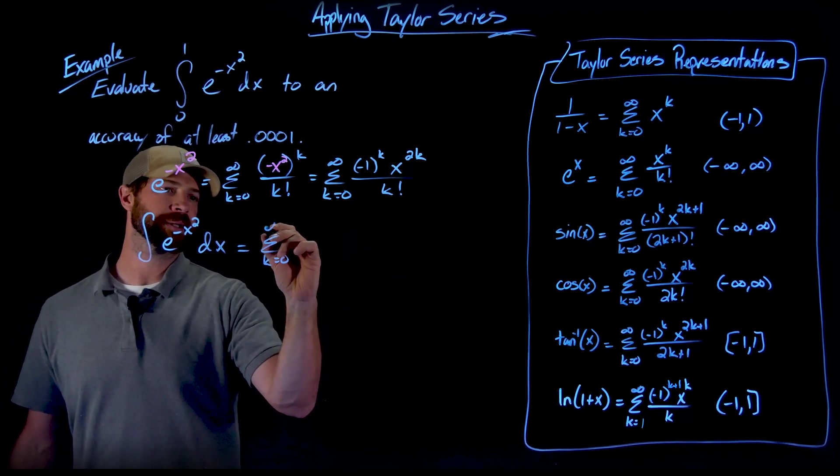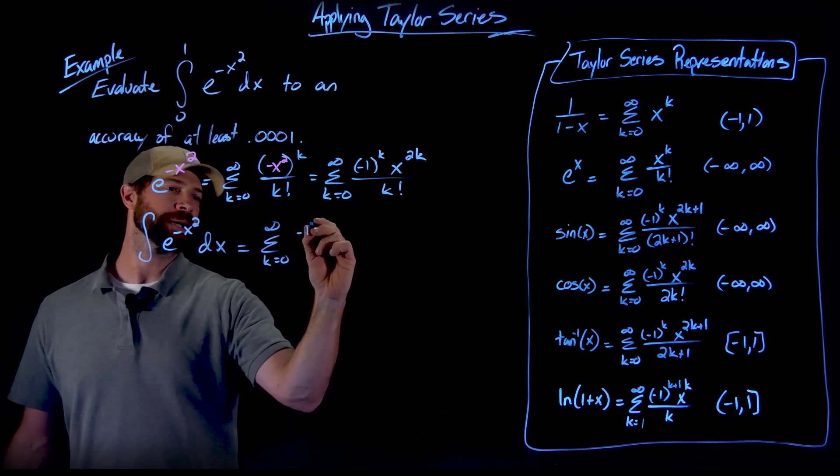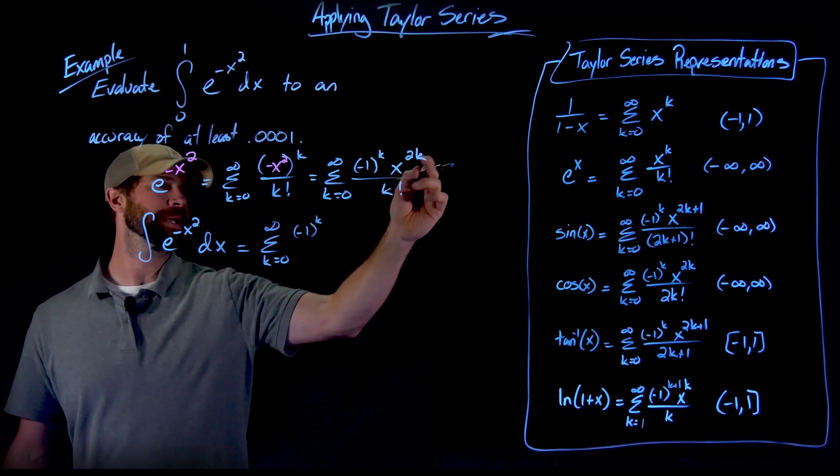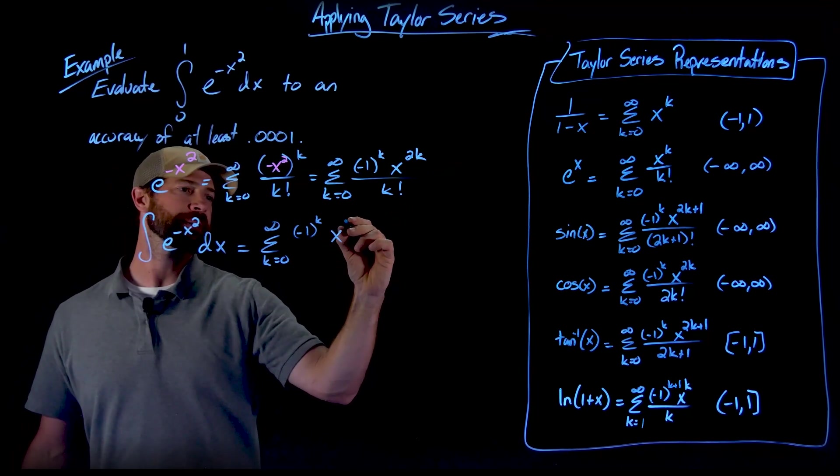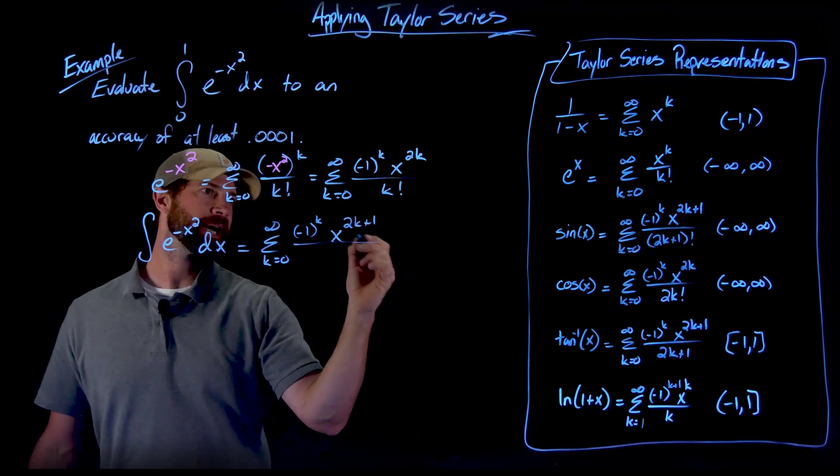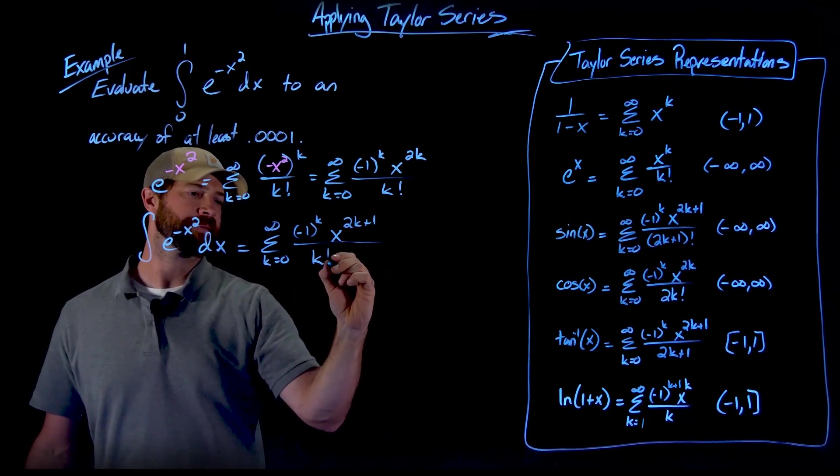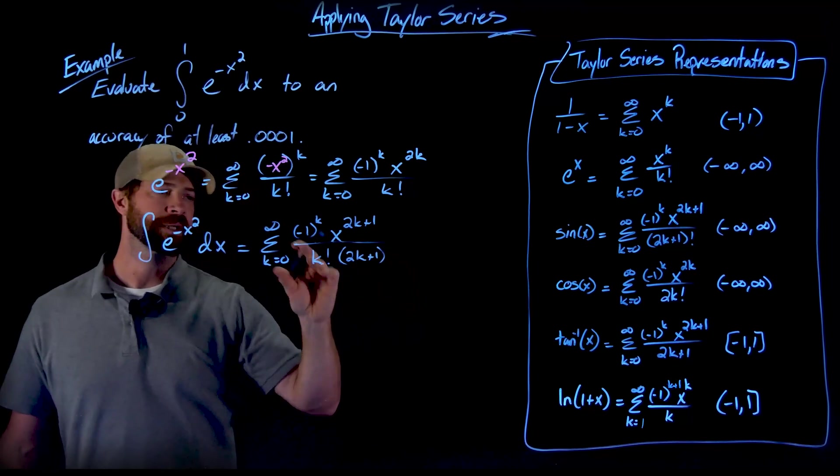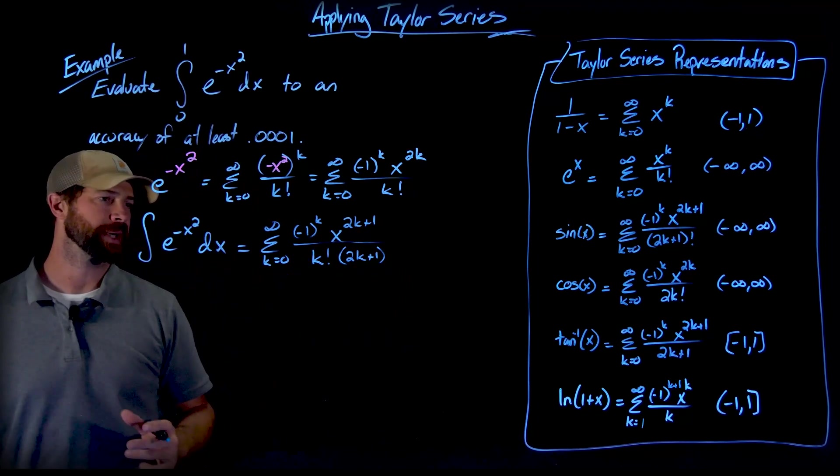And so I'll rewrite this real fast. This negative 1 is just a constant term. It doesn't get affected by the integration. Here I'm going to add 1. So this becomes x to the 2k plus 1 and then divide that by 2k. So I'll write this as k factorial times this 2k plus 1. And again just using the anti-power rule right there.